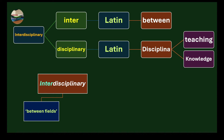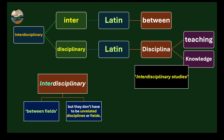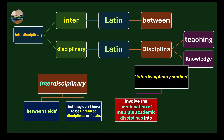Interdisciplinary means between two fields, three fields, or more than one field. But these fields don't have to be unrelated — they must be somehow interrelated, with some sort of kinetic bond between the two disciplines. This leads to the concept of interdisciplinary studies, which involve the combination of multiple academic disciplines into one activity or field of study.